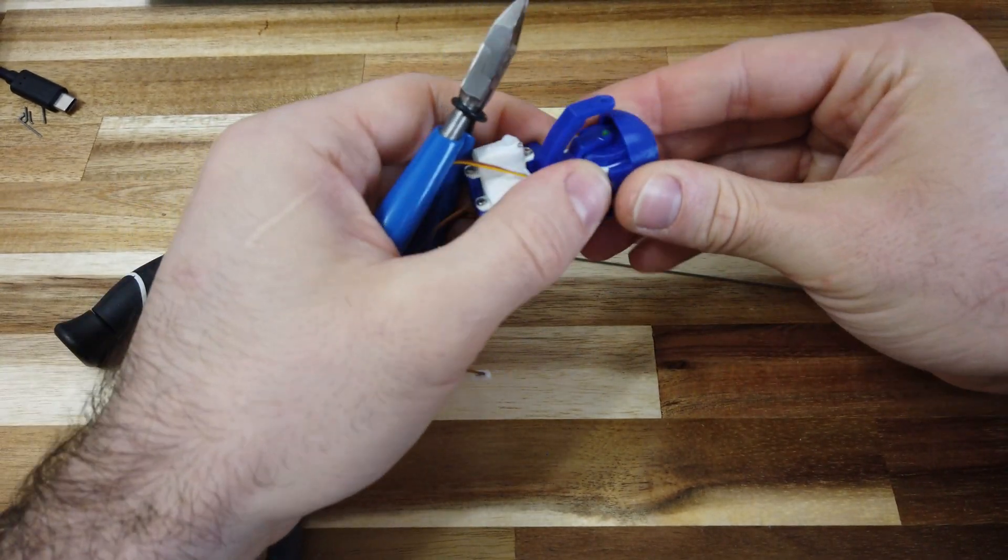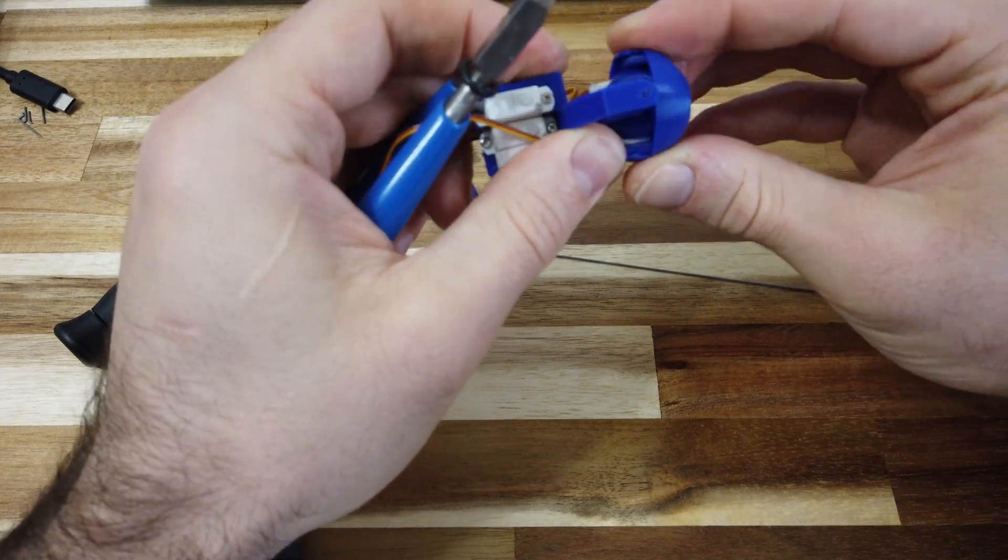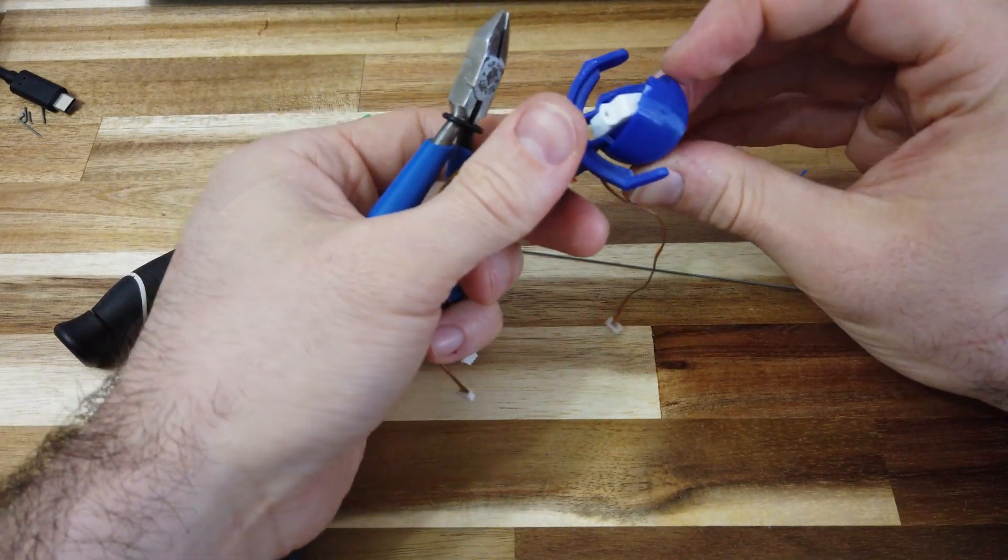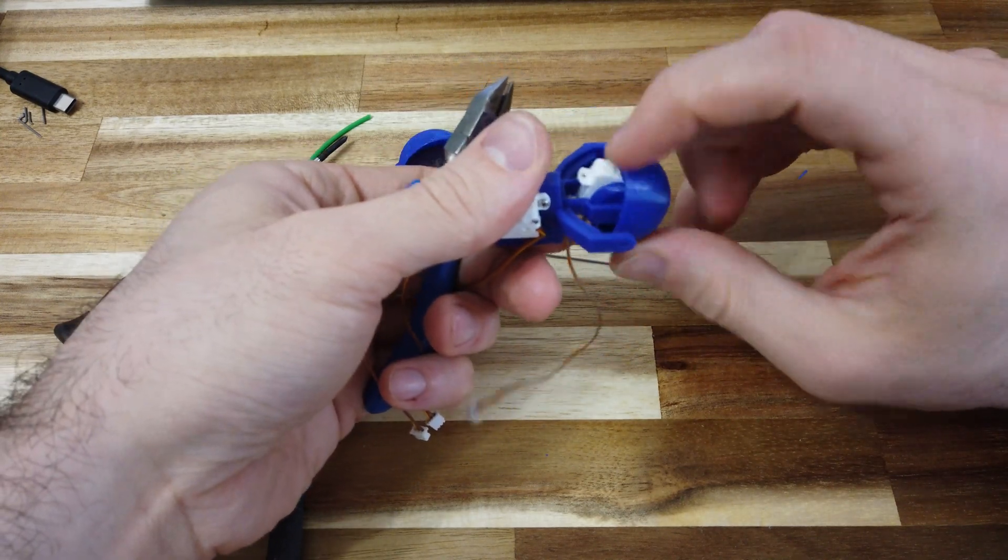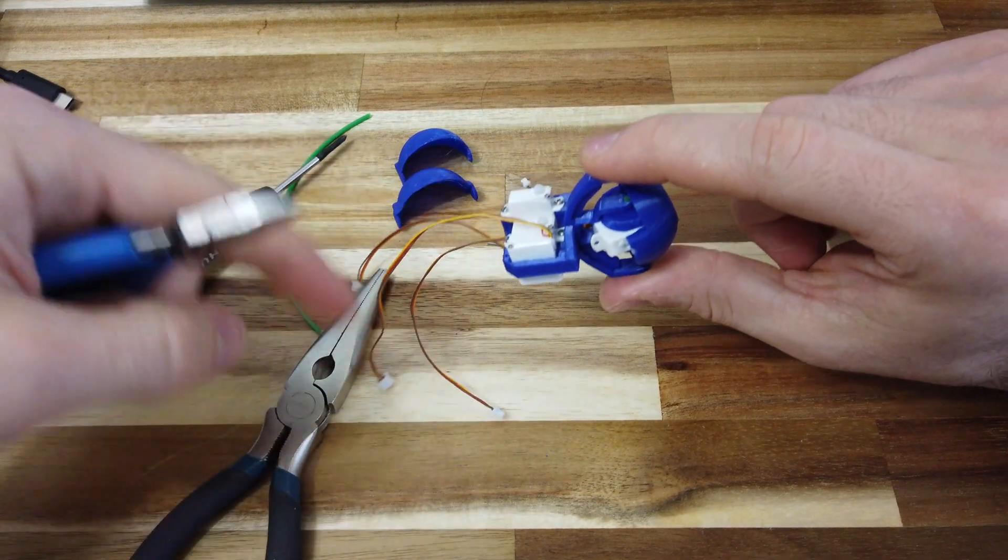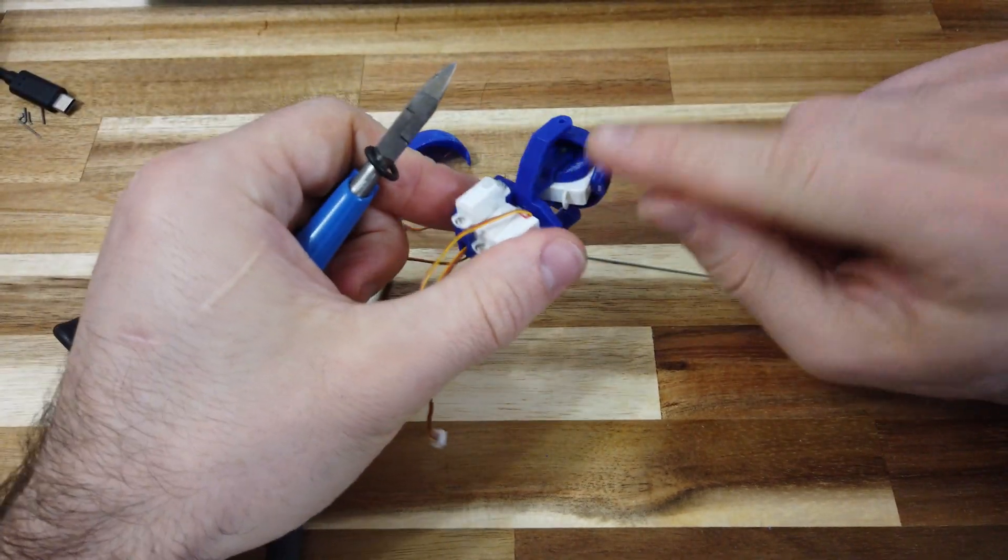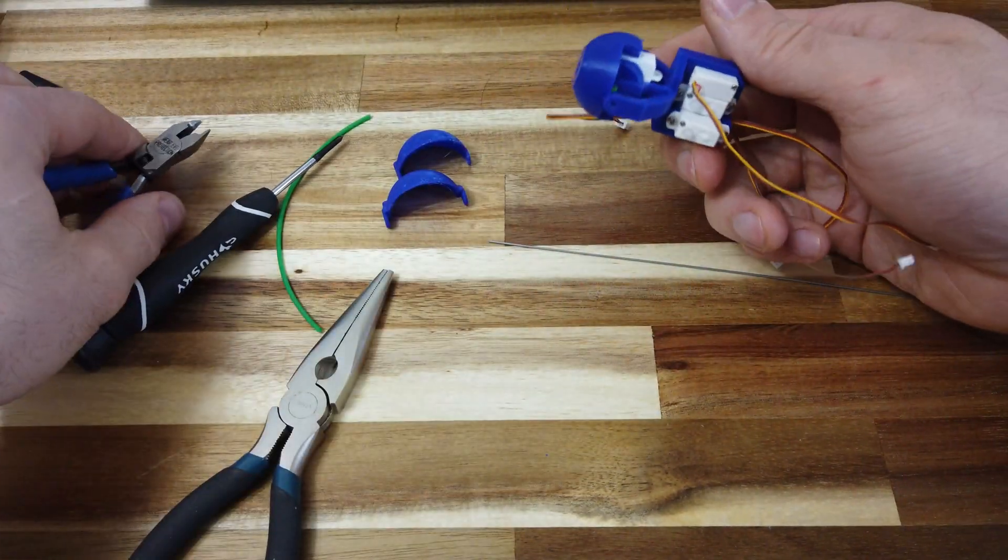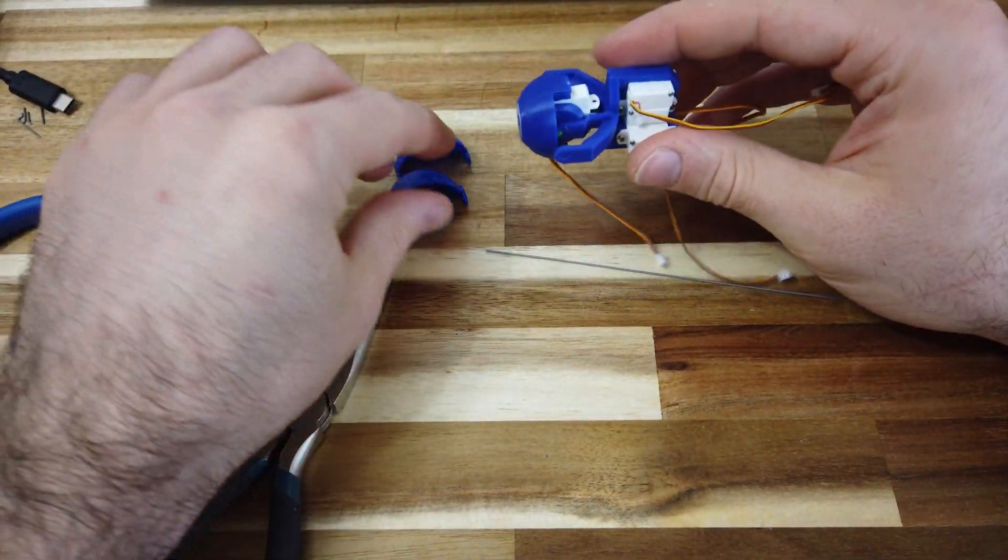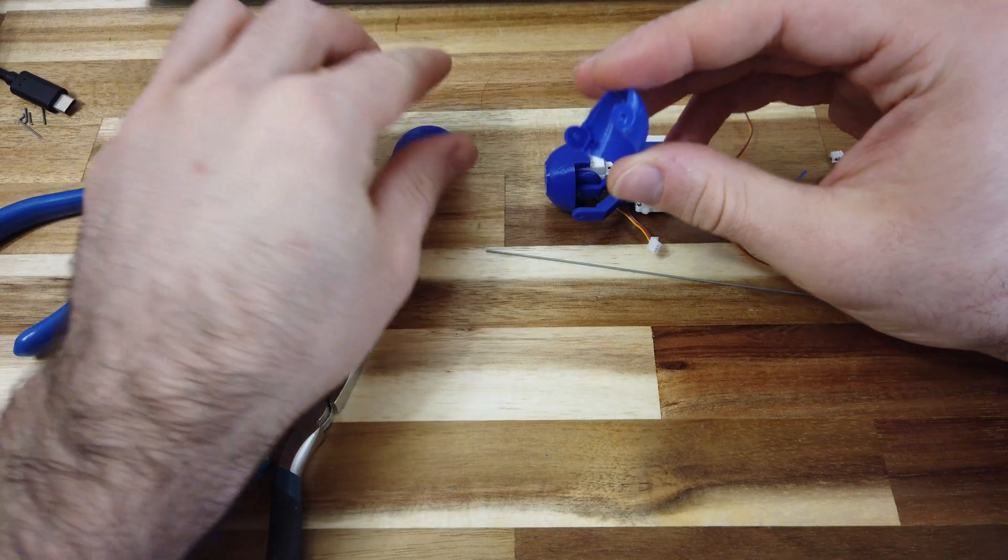It's always helpful to have it kind of pointing forward. So that's it set, you can hear the gears move, and to get it to go up and down, we're going to create a custom pushrod to go into that slot we're talking about.